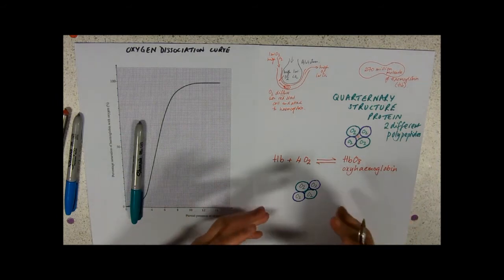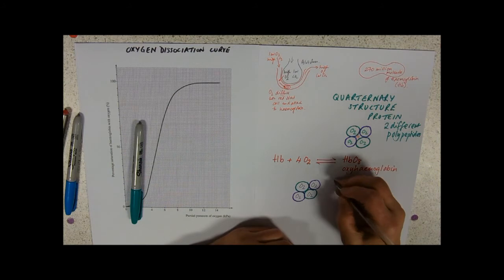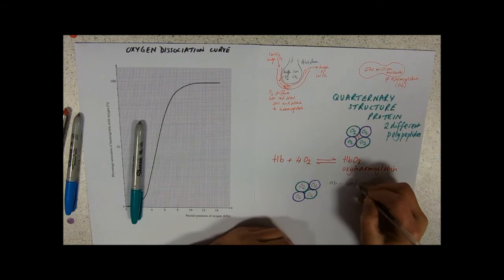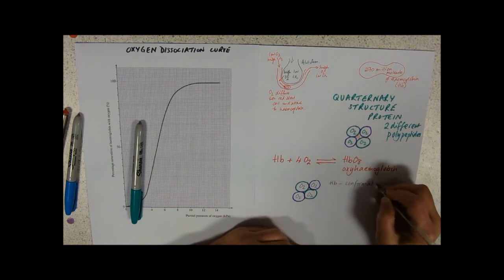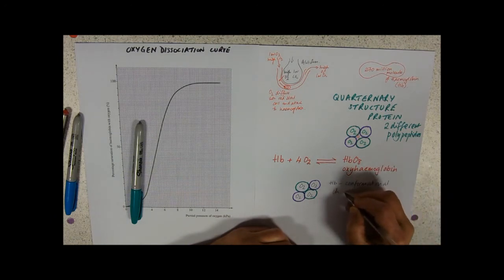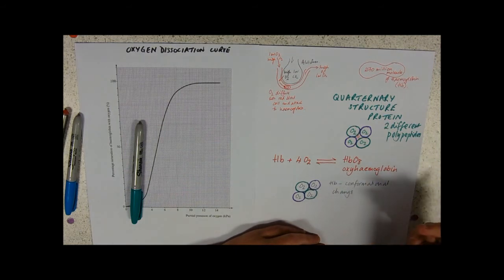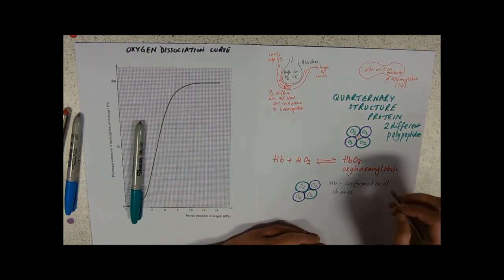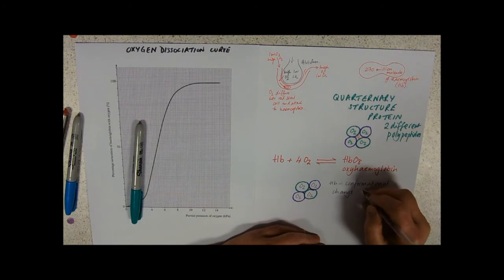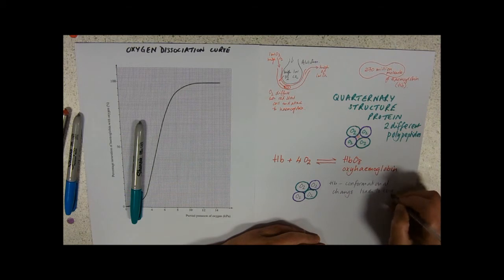This phenomenon is caused by the hemoglobin doing what's called a conformational change. It means that it changes shape slightly to be more ready to accept the next oxygen. So the first one causes a conformational change, makes it easier for the next oxygen to attach, and we say that leads to cooperative binding.